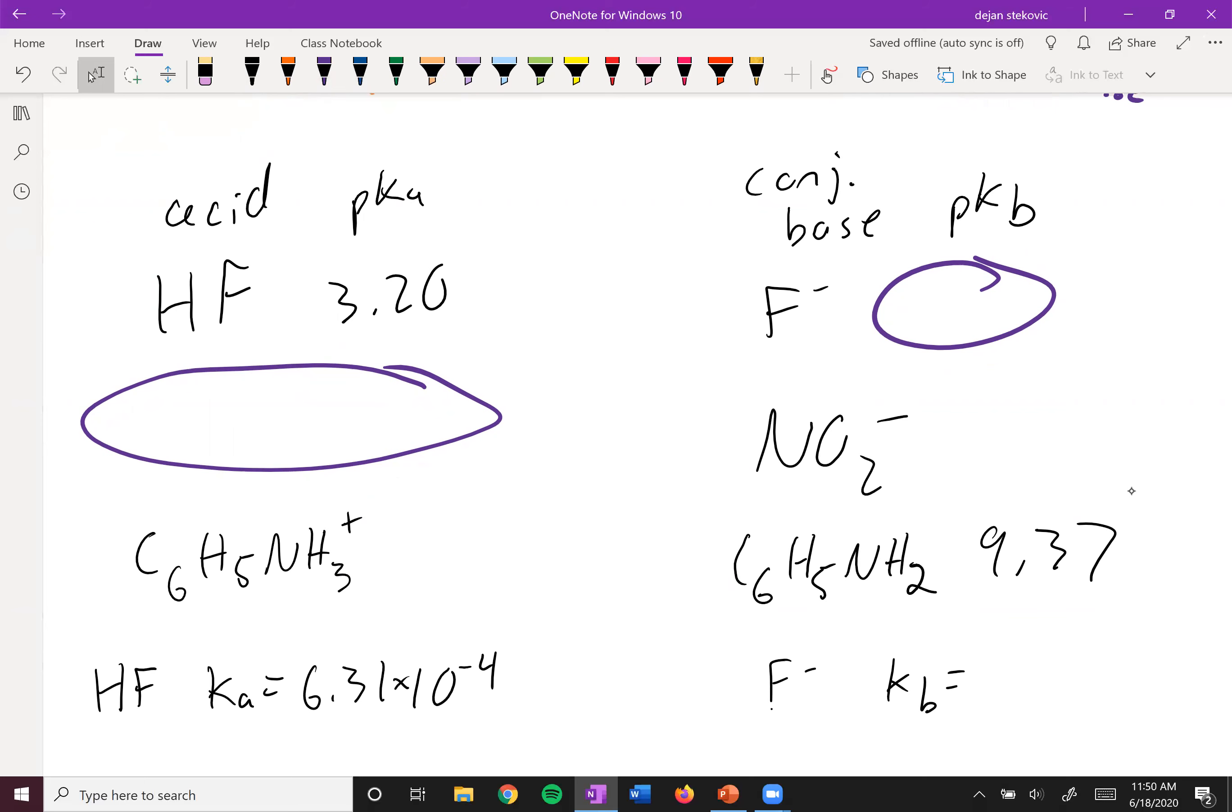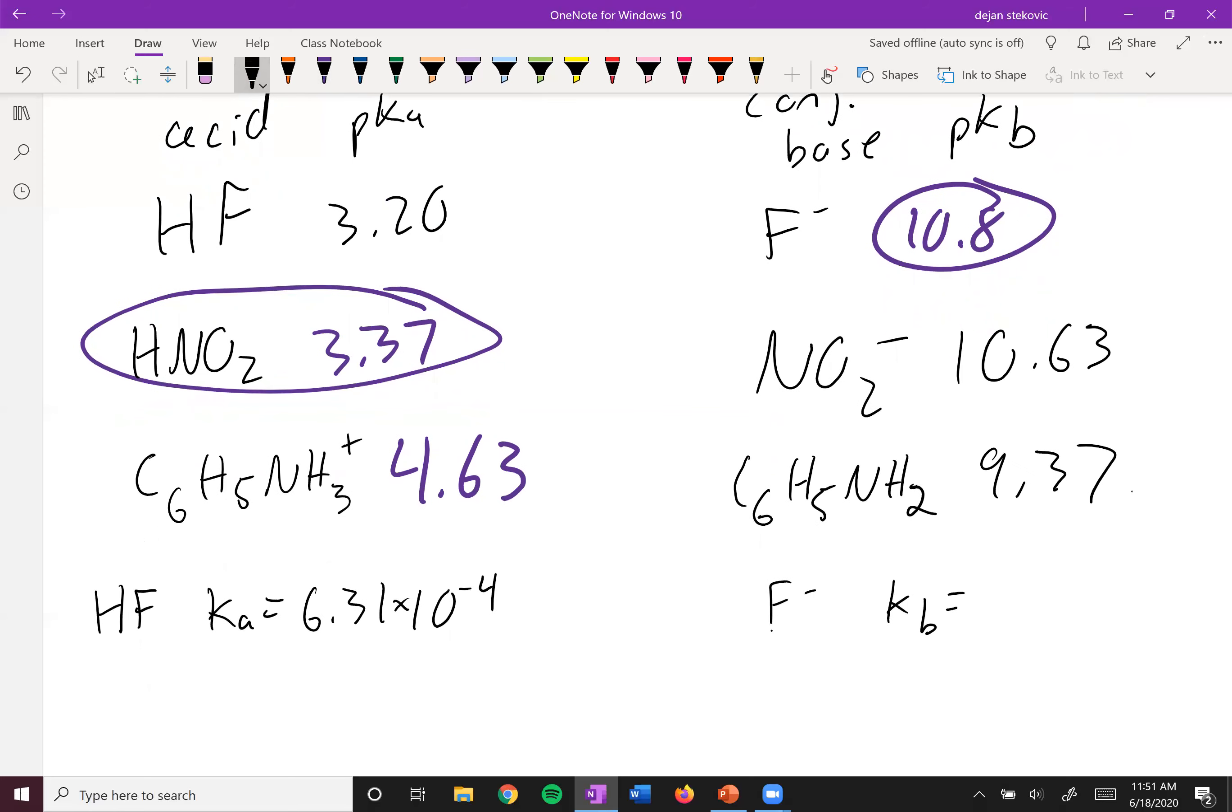So if you know that the PKA of HF is 3.2, then you know the PKB of its conjugate base is going to be that minus 14, so 10.8. If you have NO2 minus as the base, whoops, I forgot to give you the value, it should be 10.63, as the base, then you know its conjugate acid is going to be HNO2, and you know that it will have a PKA of 3.37. If you have this guy, pyridine, the C6H5NH2 has a PKB of 9.37. The protonated form with this extra H has a PKA of 4.63. And then finally, if you know HF has a KA of 6.31 times 10 to the negative 4, you should be able to calculate the KB of F minus by basically saying that the two multiplied by each other must be 1 times 10 to the negative 14. So this ends up being 1.58 times 10 to the negative 11.